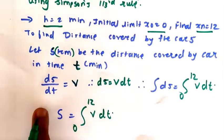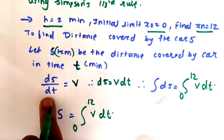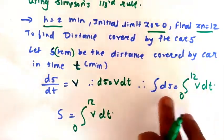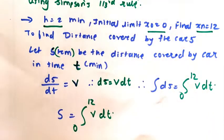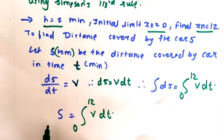So here, ds/dt equals v. Further I have shifted this dt to the right hand side. I have taken integration from both sides. Next, see d and integration, this will get cancelled, so it will be s equals integral from 0 to 12 v into dt.